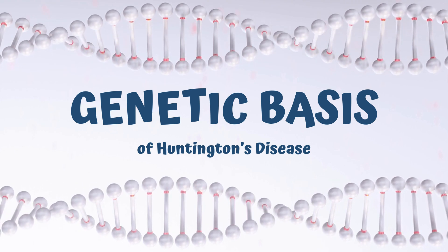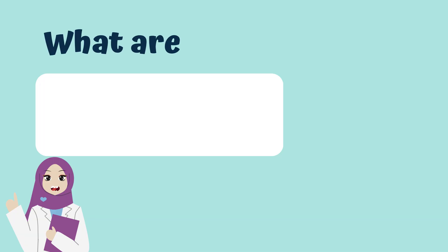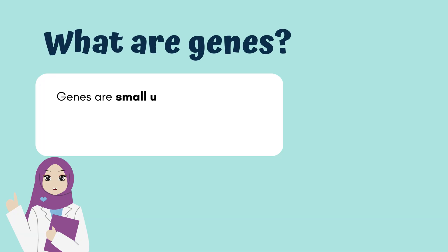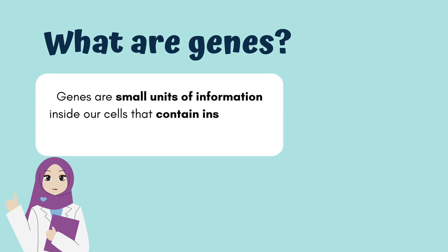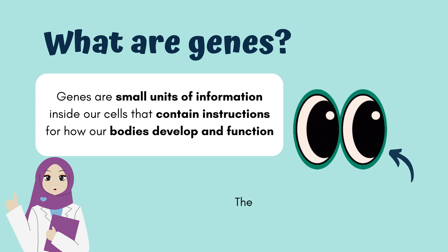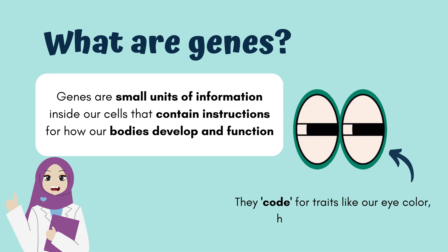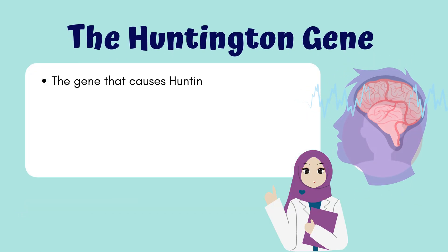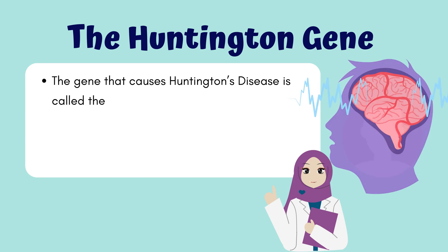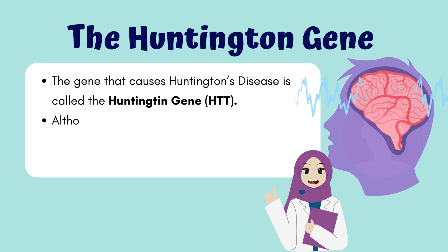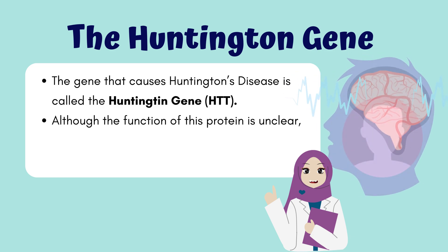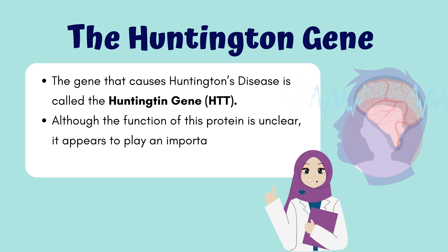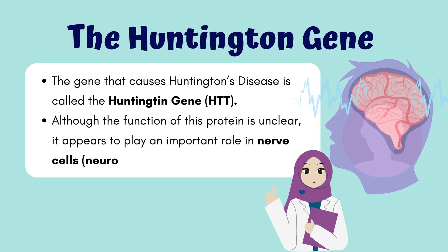The genetic basis of Huntington's disease begins with understanding genes. Genes are small units of information inside our cells that contain instructions for how our bodies develop and function — for example, they code for traits like eye colour, hair colour and height. The gene that causes Huntington's disease is called the Huntingtin gene, HTT. Although the function of this protein is unclear, it appears to play an important role in neurons in the brain.